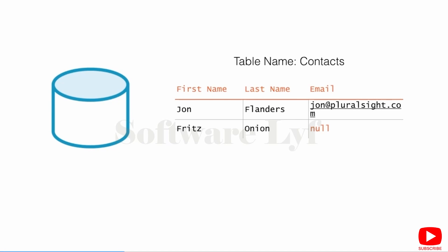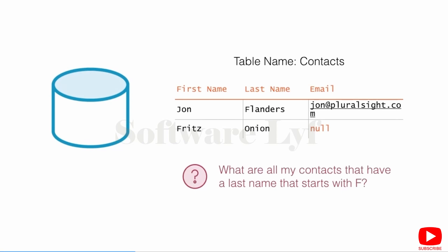We want to get this data out at some point. The way we do that is by asking questions of the database. A typical question might be something like: what are all the contacts in my database that have a last name that starts with the letter F? We take those questions and turn them into SQL that we execute against the database. When we do that, this is known as querying. Querying the database is asking questions of the database and hoping the database gives us back an answer. The database doesn't always give us back an answer — sometimes because the data just doesn't exist, or because the database wasn't set up in a way that allows us to ask that question.